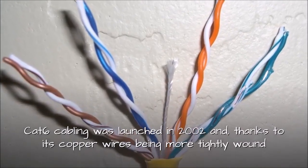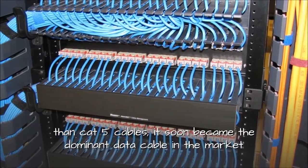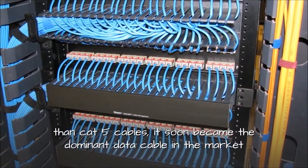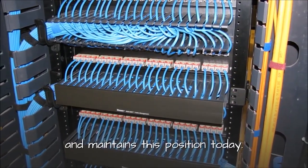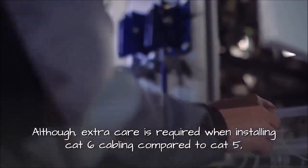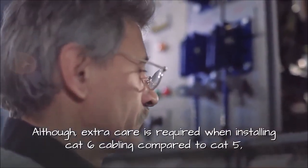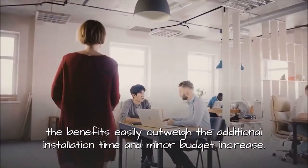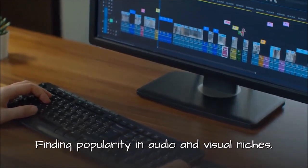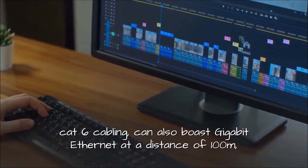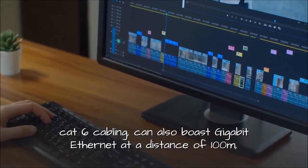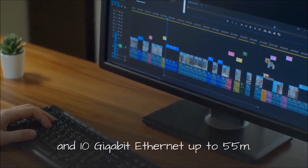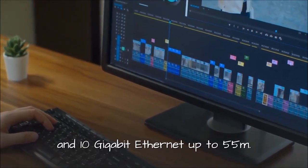CAT6 cabling was launched in 2002 and, thanks to its copper wires being more tightly wound than CAT5 cables, it soon became the dominant data cable in the market and maintains this position today. Although extra care is required when installing CAT6 cabling compared to CAT5, the benefits easily outweigh the additional installation time and minor budget increase. Finding popularity in audio and visual niches, CAT6 cabling can also boast gigabit ethernet at a distance of 100 meters and 10 gigabit ethernet up to 55 meters.